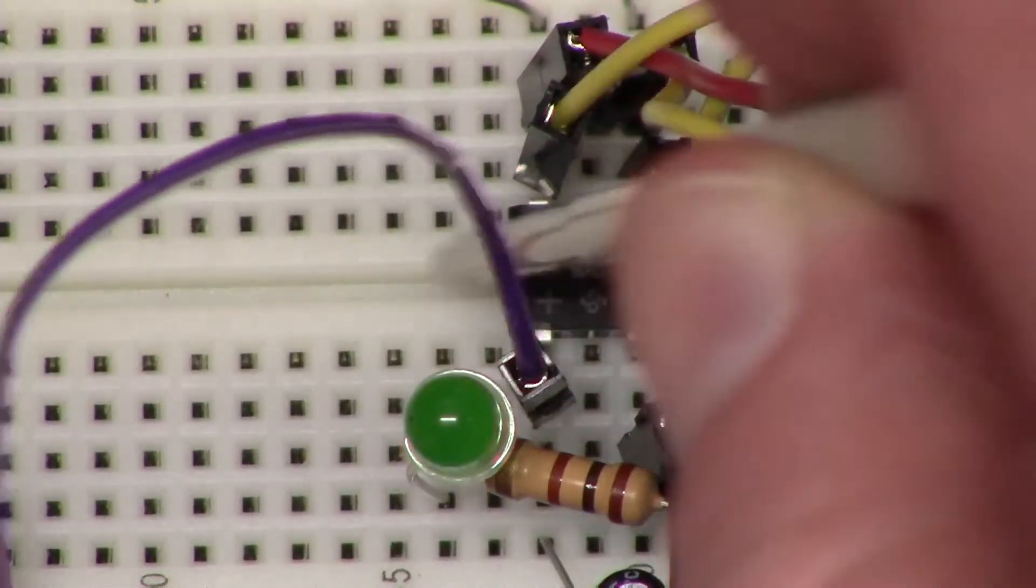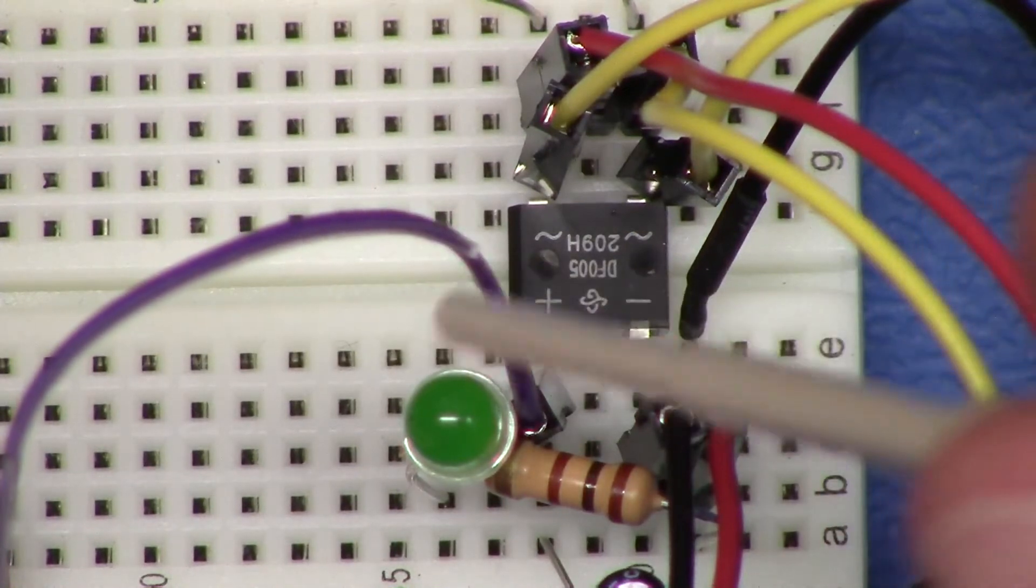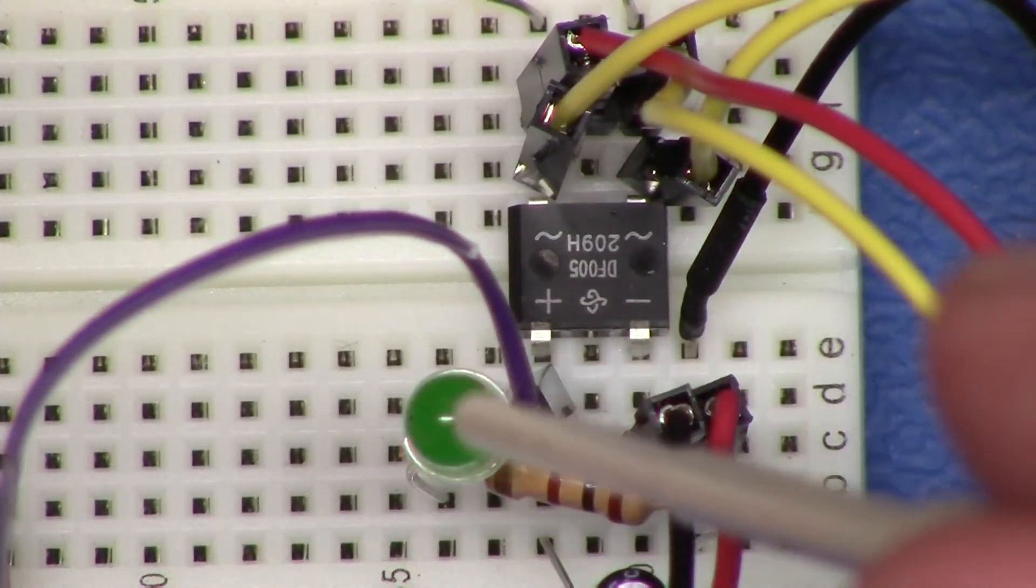That's going to monitor that voltage and the AC input side of our rectifier. Then we have the output of our rectifier going off to the ESP32 and into an LED.